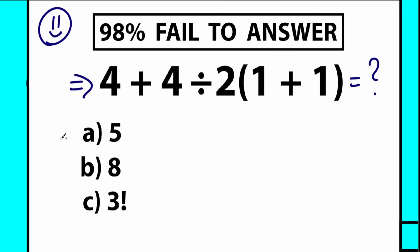So here we have three options: option A, option B, and option C. Right now choose one option and write your solution down into the comment section in two or three lines. Write your solution and your answer. It will be really interesting to check our answers at the end of the video.